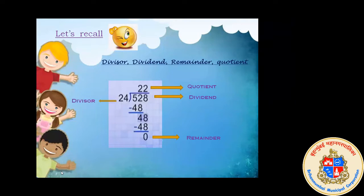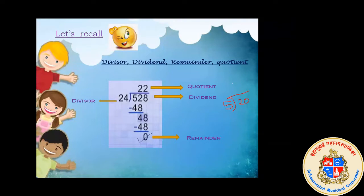So can we say that 528 is completely divided by 24? Yes, we can say that 528 is completely divided because the remainder is zero. When we get remainder zero, we can say the number is completely divided.